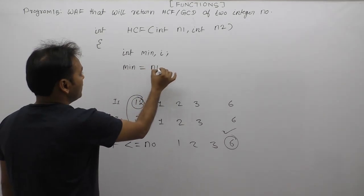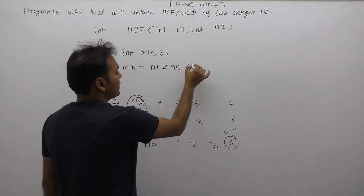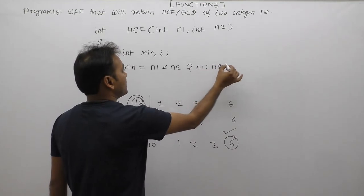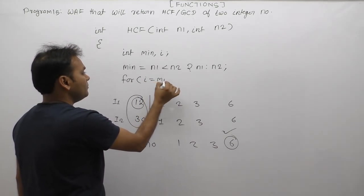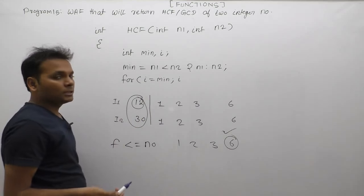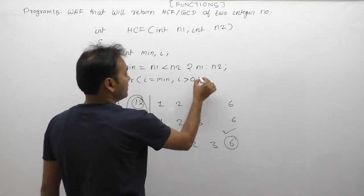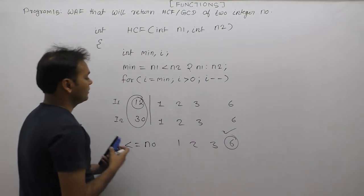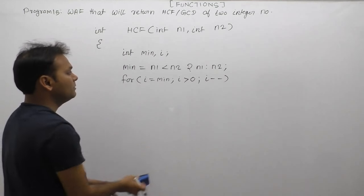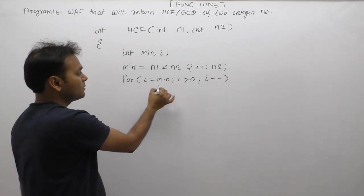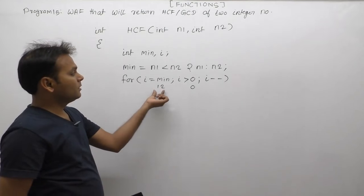To find the minimum: if n1 < n2, then min = n1, otherwise min = n2. We initialize i to min and run the loop. The loop runs from min down to 1: i is initialized with min, condition is i > 0, and every time i-- (decrement). So for 12 and 30, i starts at 12 and goes down to 1.